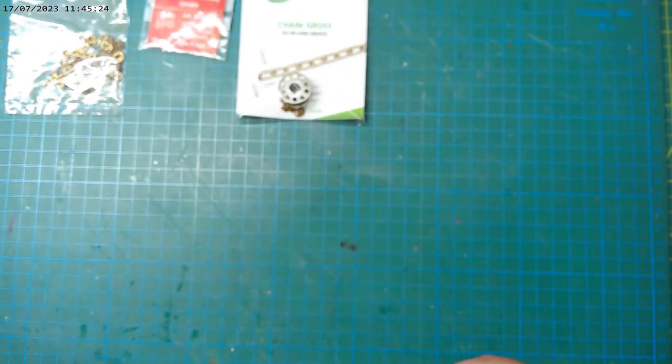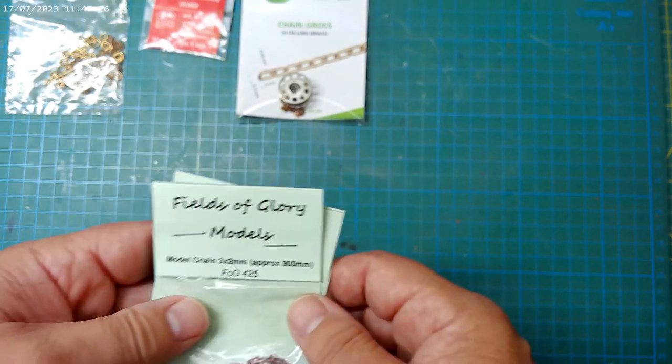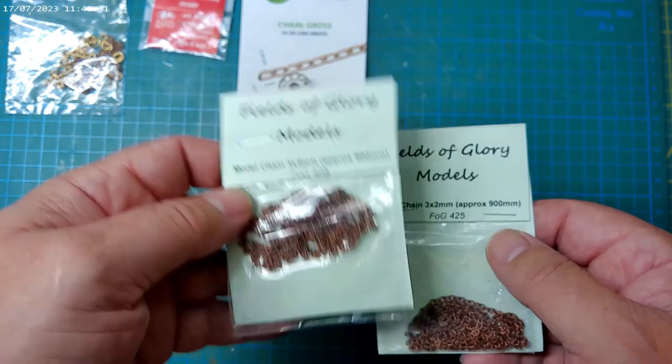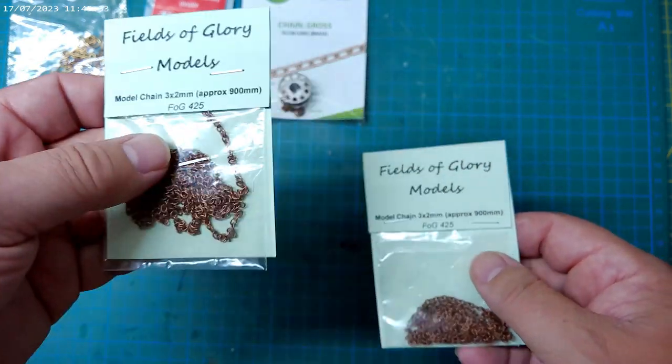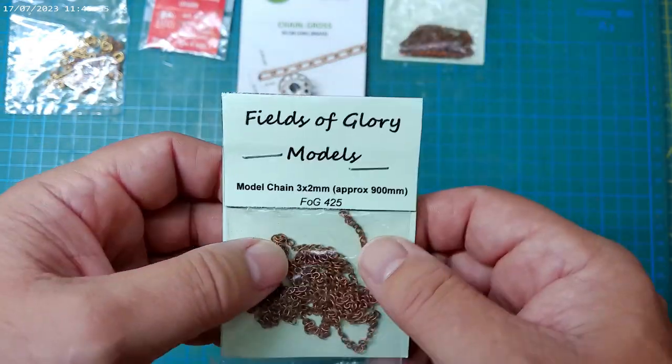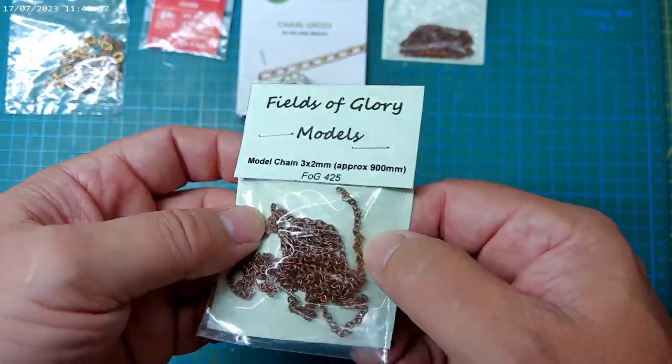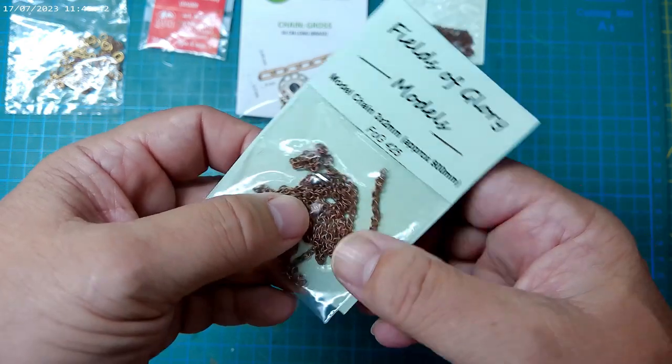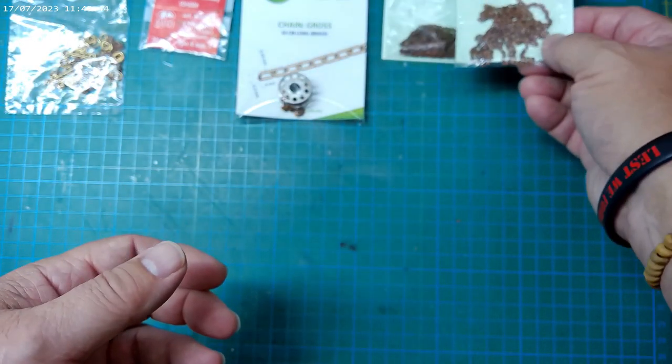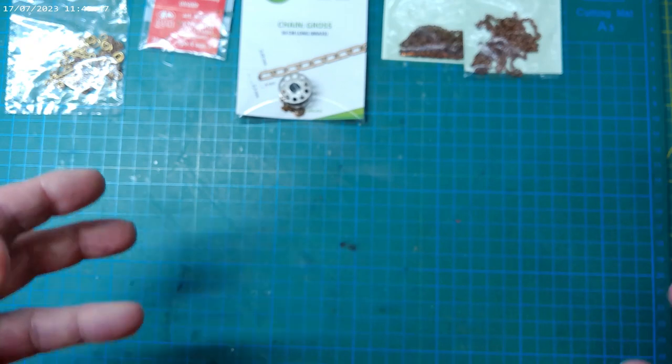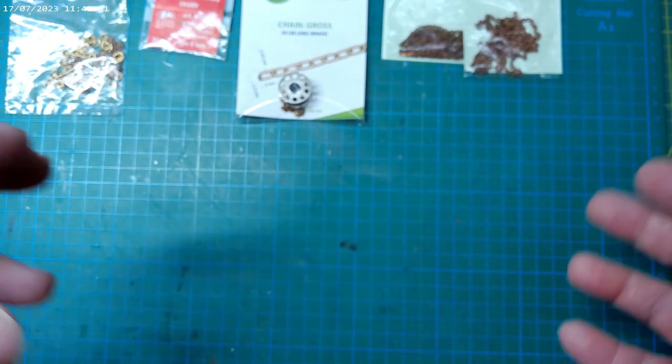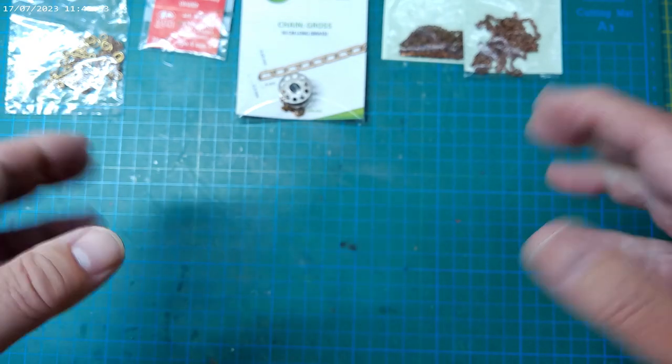Also a company over here called Fields of Glory Models - they stock chain. So I actually bought a couple of packets. These aren't expensive - it's a couple of quid each that sort of price. I bought some length of chain there. These are just for general use. I mean if you're building military models, you know, lengths of chain for tanks and recovery vehicles, all that sort of thing.